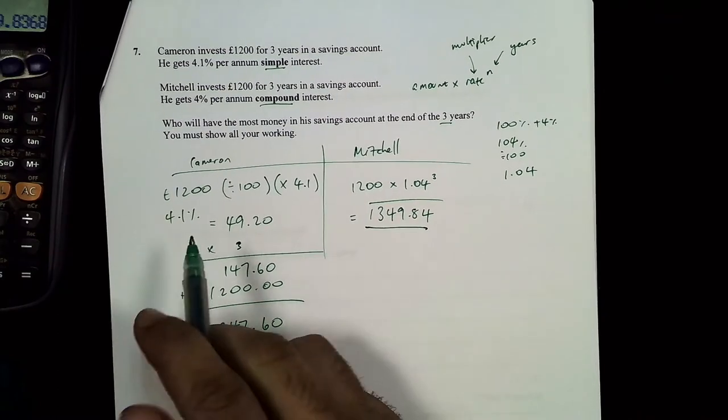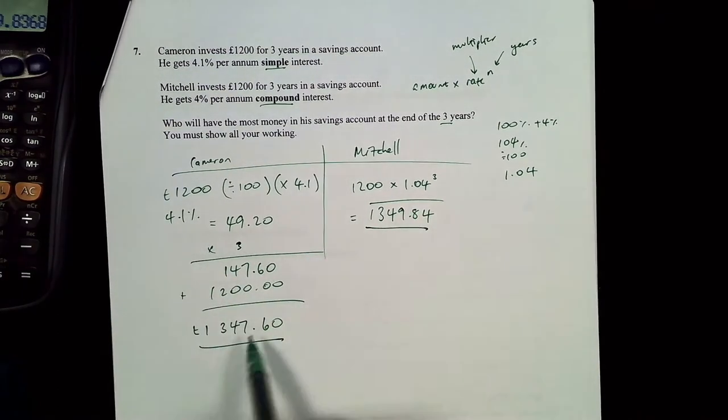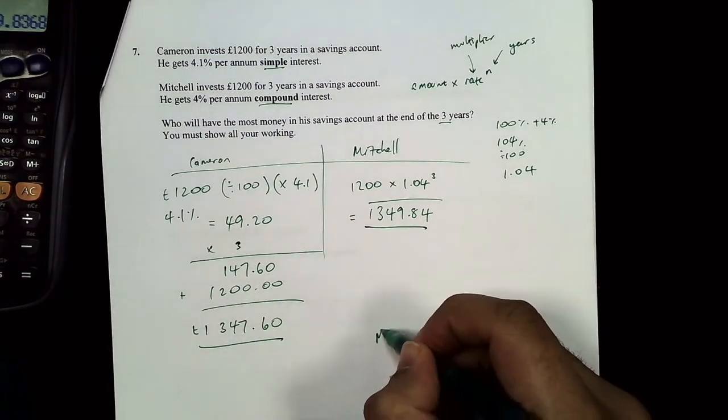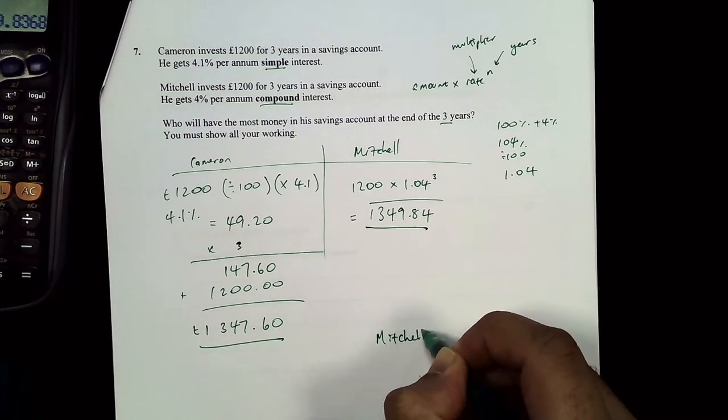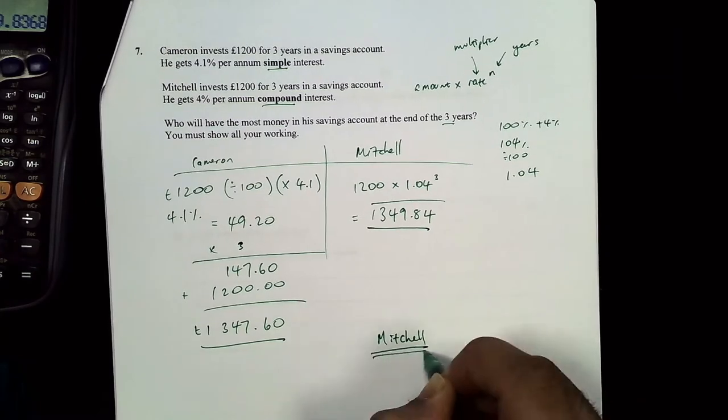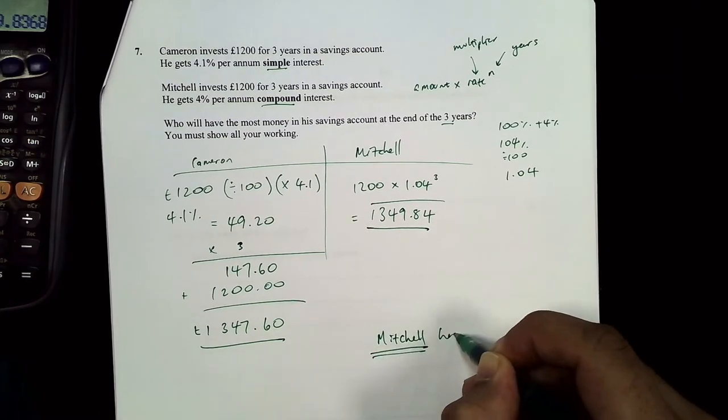Comparing: Cameron has £1347.60 and Mitchell has £1349.84. Who has the most money? It's Mitchell — Mitchell has more money at the end of three years.